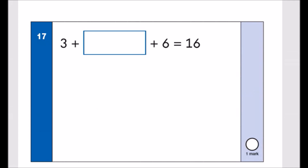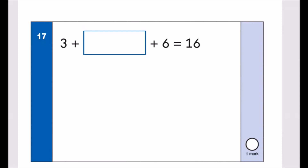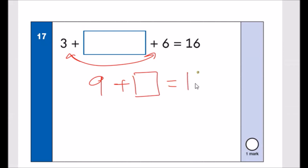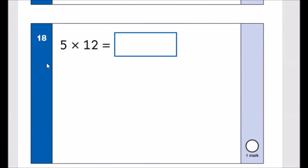You're doing well — give yourself a pat on the back! Number seventeen: 3 plus an unknown plus 6 equals 16. First, 3 add 6 equals 9. So 9 plus an unknown equals 16. Use the inverse: 16 take away 9 on a number line gives 7. The answer is 7.